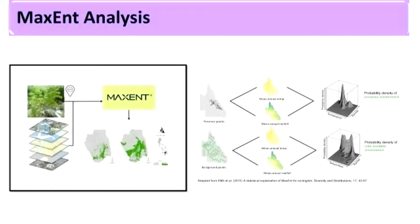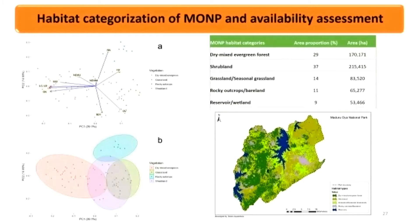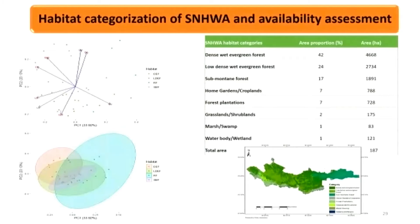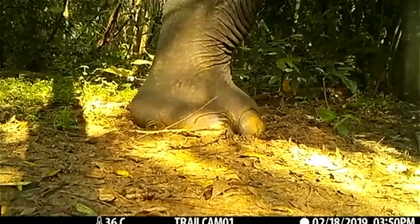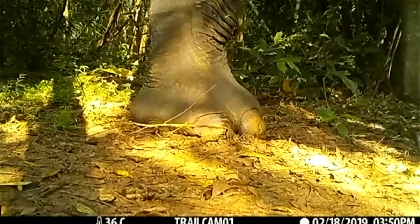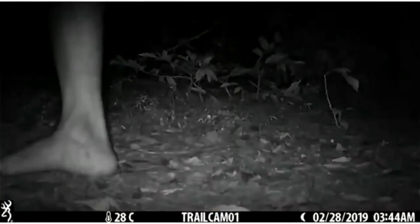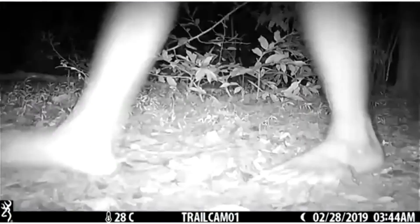We followed the standard MaxEnt modeling procedure. Moving on to results and discussion: the first result shows the vegetation types, categories, and area coverage in Maduru, Horton Plains, and Sinharaja — updated maps based on recent satellite images. The trapping effort usually exceeded 2,000 trap-days at each site, varying depending on the area of the protected area. To provide an idea of our observations, this shows an elephant, a ruddy mongoose, and probably a civet in the night-time period in the same tamana forestry in Maduru.